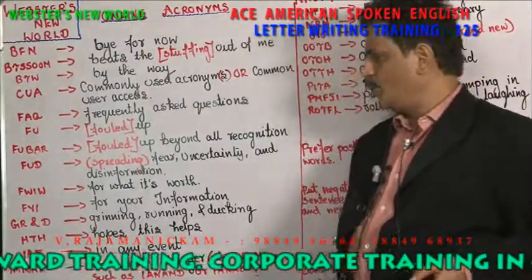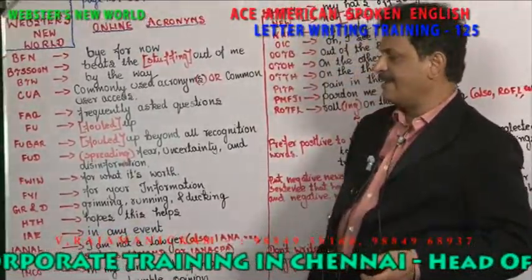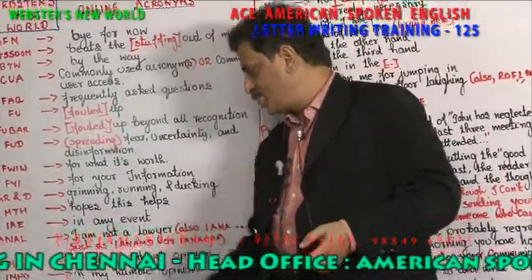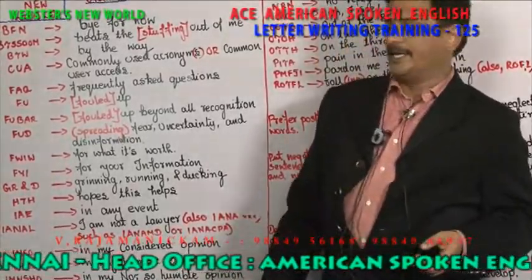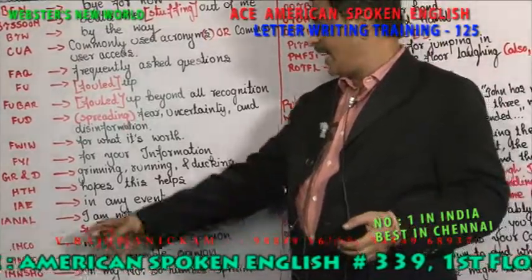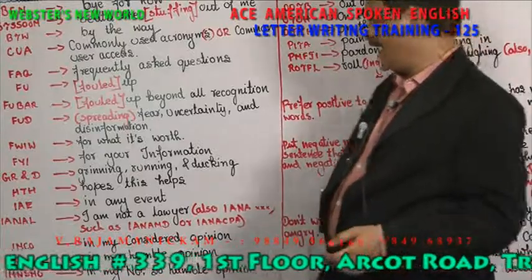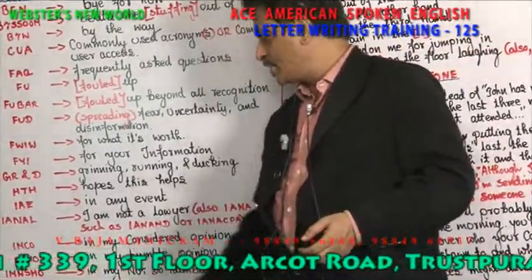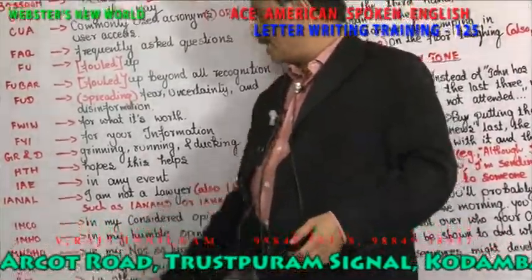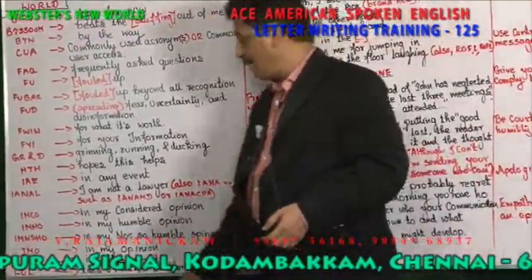IAE means 'in any event.' IANAL means 'I am not a lawyer.' IMCO means 'in my considered opinion' — according to me. IMHO means 'in my humble opinion' — according to my opinion. IMNSHO means 'in my not so humble opinion.' IMO means 'in my opinion.'